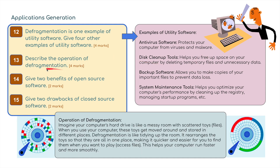Question thirteen: describe the operation of defragmentation - four marks. We've got two hard disks shown here. The one on the left has bits of data scattered all over the hard disk. On the right it's been defragged. Using the analogy of a messy room with scattered toys: if your hard disk is like this, where files are like scattered toys, when you use your computer these toys get moved around and stored in different places. Defragmentation is like tidying up the room - it rearranges files so they are all in one place, making it quicker and easier to access them and helping your computer run faster and more smoothly.